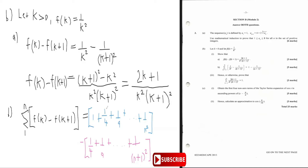Now, a quarter minus a quarter cancels. One over nine cancels. All the other terms cancel. One over n squared cancels with one over n squared. So what you're left with is one minus one over n plus one all squared. That's part B — nice and easy.